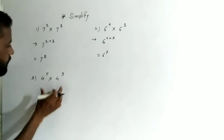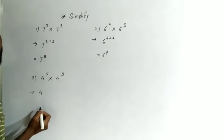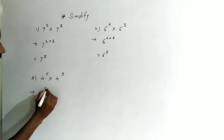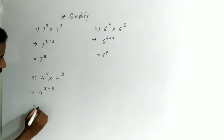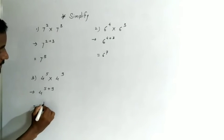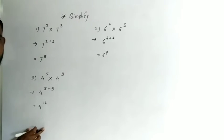Now the base is the same, so we add the powers. 5 plus 9 equals 14. So 4 raised to the power 14 is our answer.